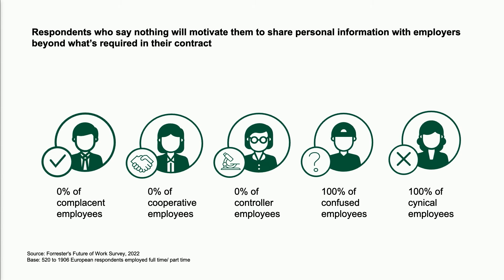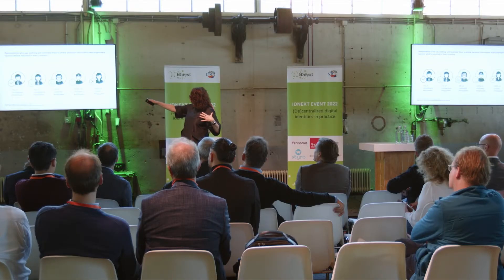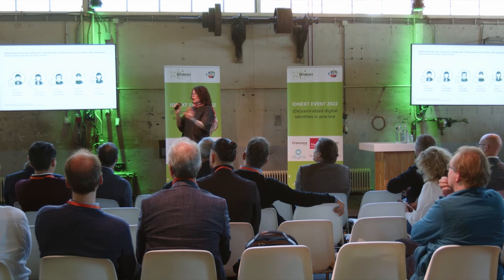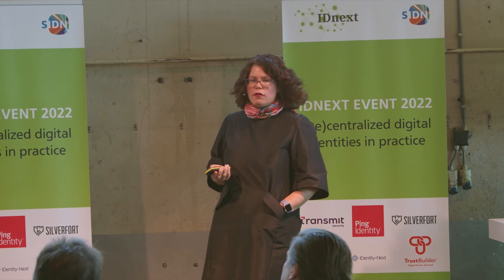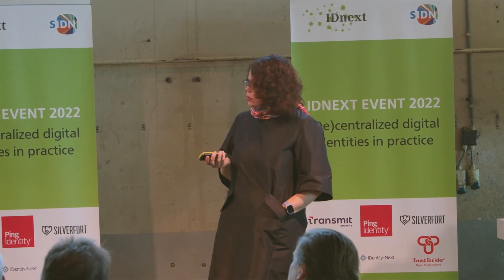If you look at this segmentation, the critical divide is willing to share versus not willing to share. Your confused and cynical people are not willing to share — they say nothing would motivate them. The folks in the other segments are willing to share under certain conditions, and those conditions vary depending on which kind of employee they are. Let's dig into who these people are and look at what they do.